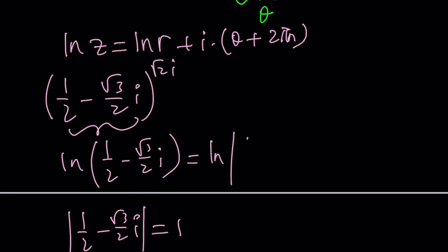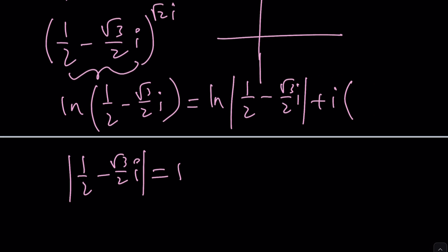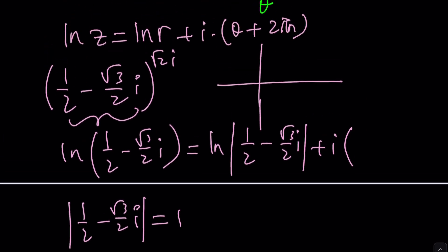This is the absolute value of ln of the absolute value which is 0 plus i times the argument. That is the most important part. What is the argument for this number? Let's go ahead and plot it. One half is going to be here and as you know root 3 over 2, absolute value of course, root 3 over 2 is greater than one half because root 3 is greater than one. So it's going to be like this. Its real part is positive, imaginary part is negative. So we have a negative angle.